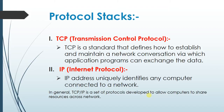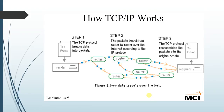Now let's see how TCP/IP works. When we type some message, the TCP protocol breaks the data into packets. The packets travel from router to router over the internet according to IP protocol. Now the TCP protocol reassembles the packets into the whole original data. This is how data transfers over the net.